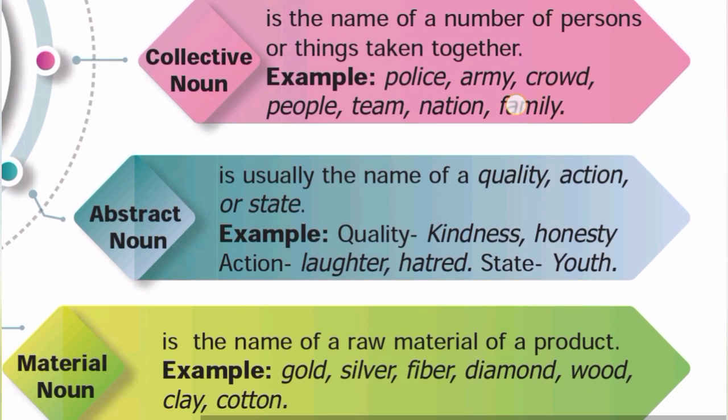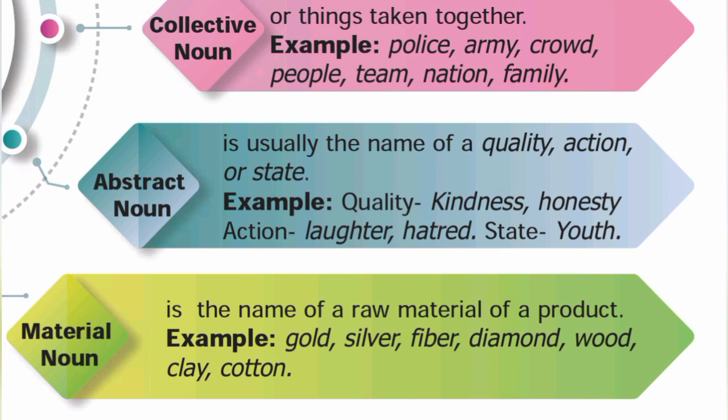Abstract noun is usually the name of a quality, action, or state. For quality, examples include kindness and honesty. These describe qualities — that is why they are abstract nouns.